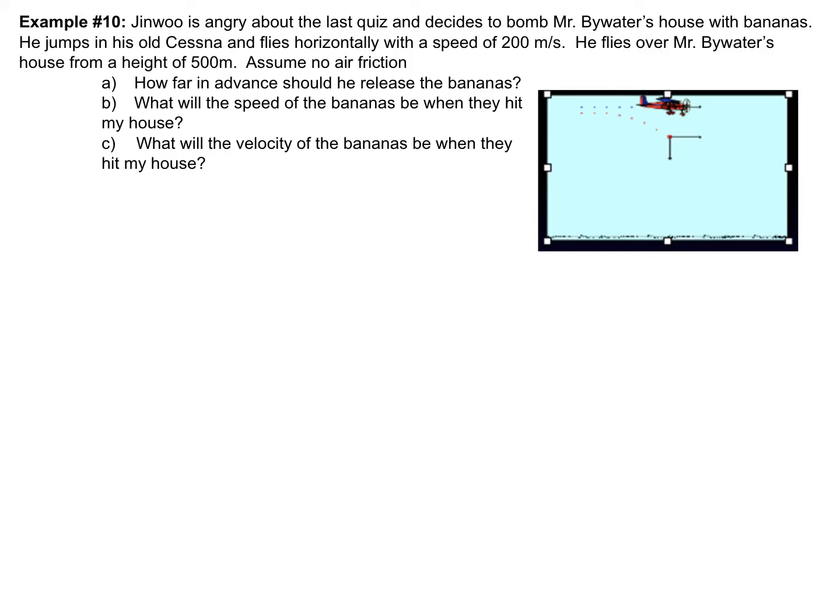I'm going to be a straight shooter — this is about as challenging as it gets when we're doing two-dimensional kinematic motion. We've got a student that's a little bit unhappy about the last quiz and decides to bomb my house with bananas using his old Cessna airplane. He's flying horizontally with a speed of 200 meters per second and flies over my house at a height of 500 meters.